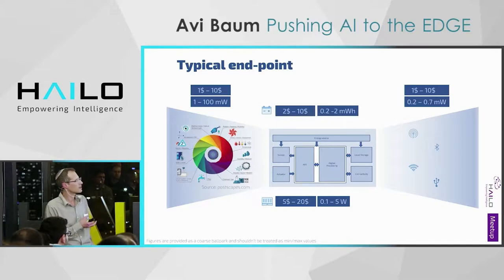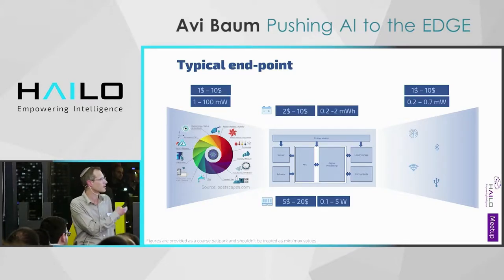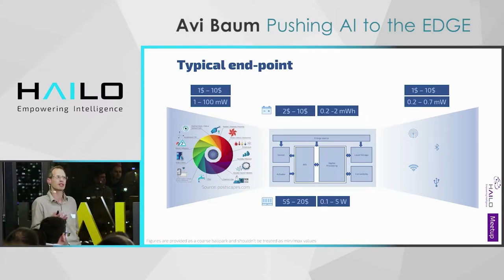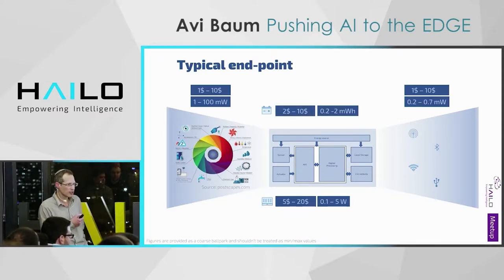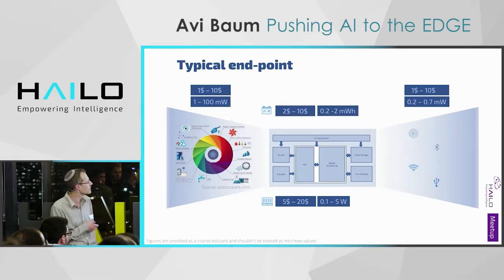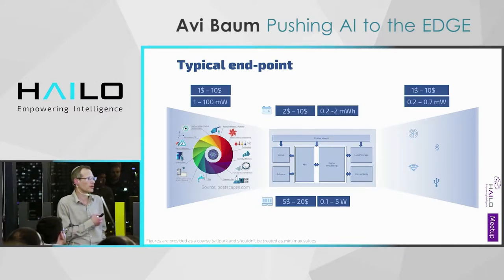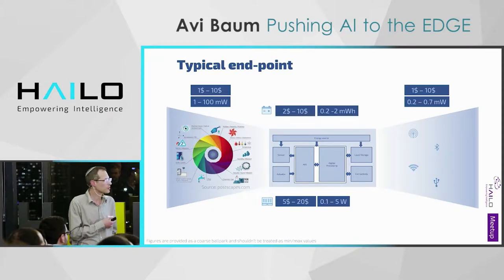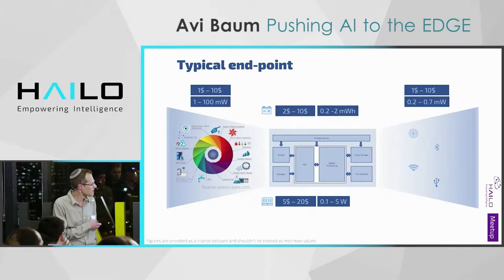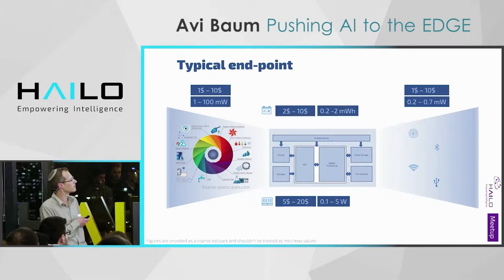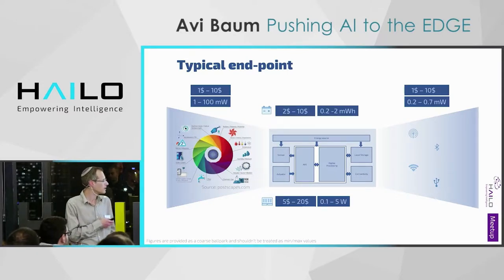The sensing element costs roughly $1 to $10 for a typical edge endpoint, and actuation as well. The battery — or other energy source — is around $1 to $2 on the low end and a few dollars on the upper end. The processing element is usually the most dominant part and takes the largest toll for the entire platform.